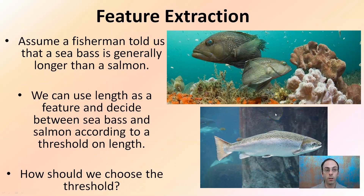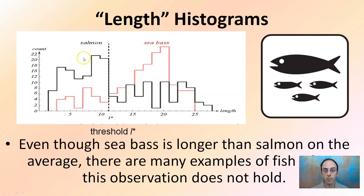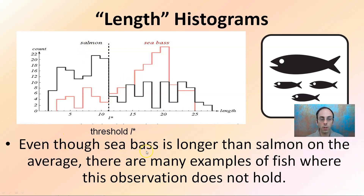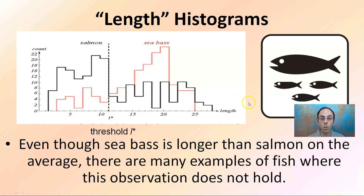From patterns, we can have feature extraction. A fisherman told us that a sea bass is generally longer than a salmon. We can use length as a feature to decide between sea bass and salmon according to a threshold on length. Looking at a length histogram of the fish, even though sea bass is longer than salmon on average, there are many examples where the fish does not hold true. There are some longer salmon than sea bass, and some longer sea bass than salmon, but we develop that threshold — a breaking point where most of the time it holds true for one or the other.